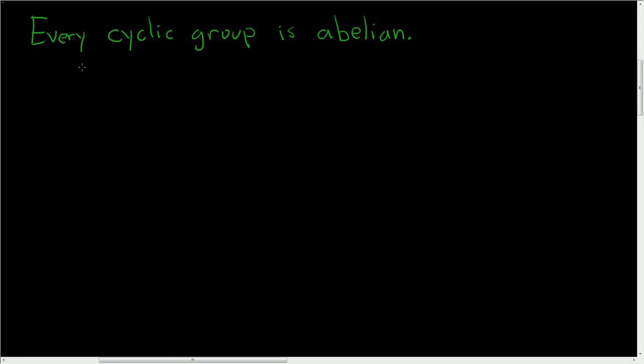It turns out that every cyclic group is abelian, no matter what. If it's cyclic, it's abelian. Let's actually prove this. It's really simple.